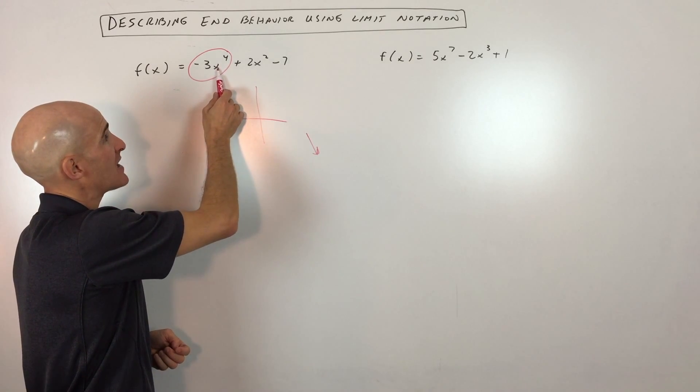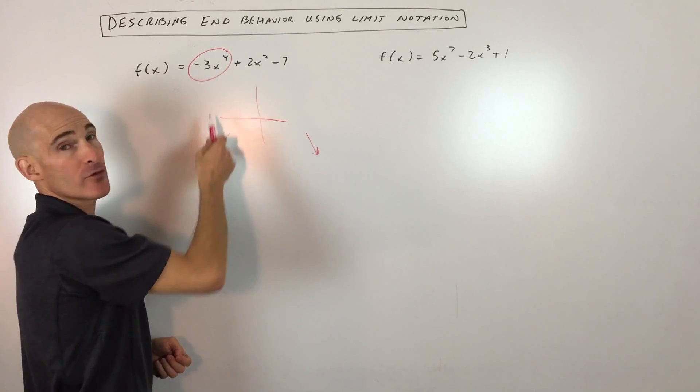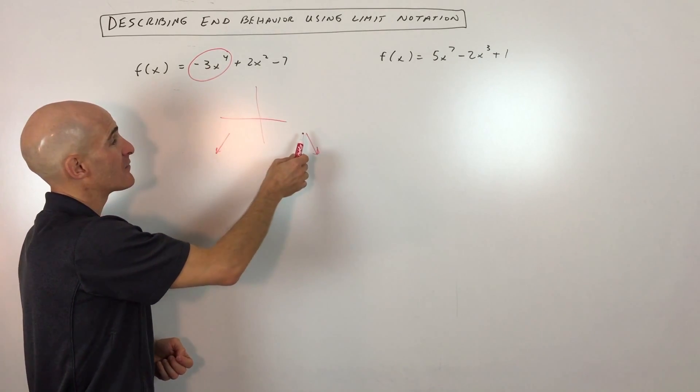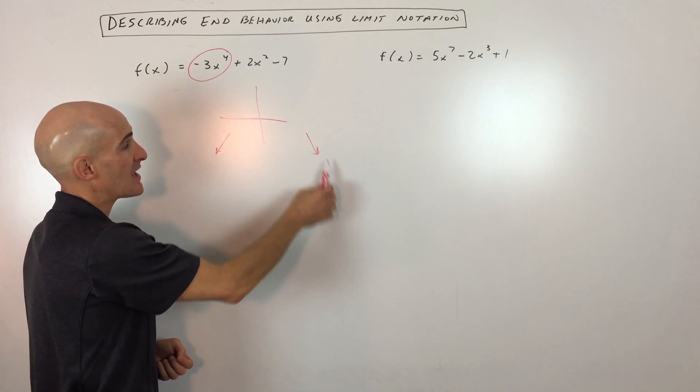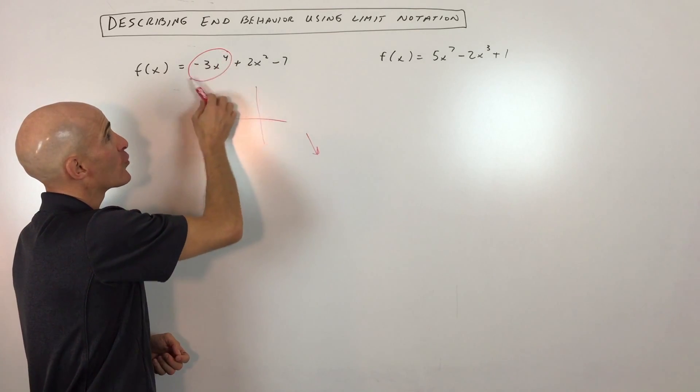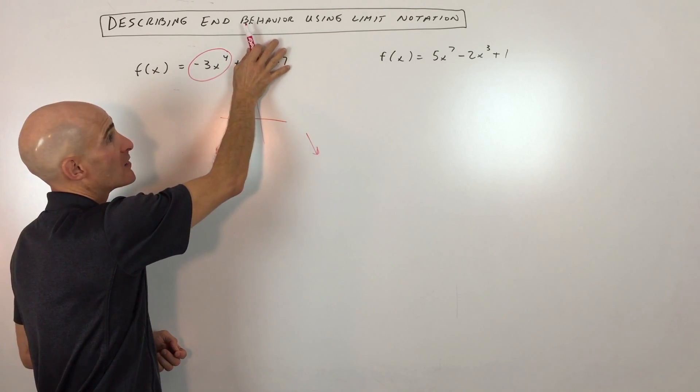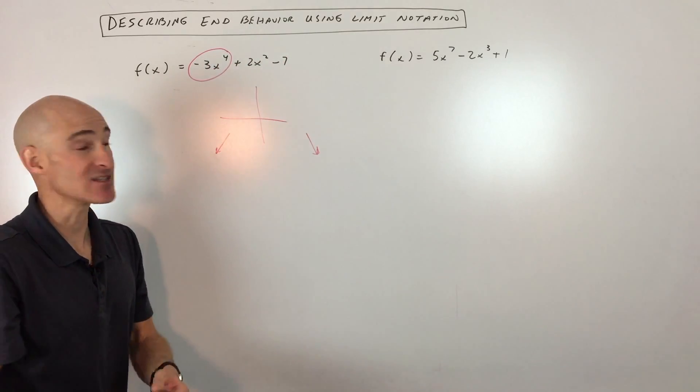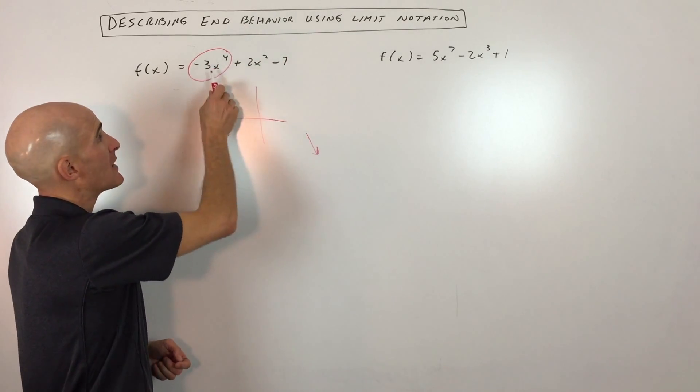Just say, let's say x is 10, for example. 10 to the fourth power is 10,000 times negative 3 is negative 30,000. So when I go over here to x is 10, I'm way down here at negative 30,000. This term is growing much faster than these two terms, so I can effectively ignore these and just focus on this term because it's growing the fastest. So that's how I know it's going down to the right.